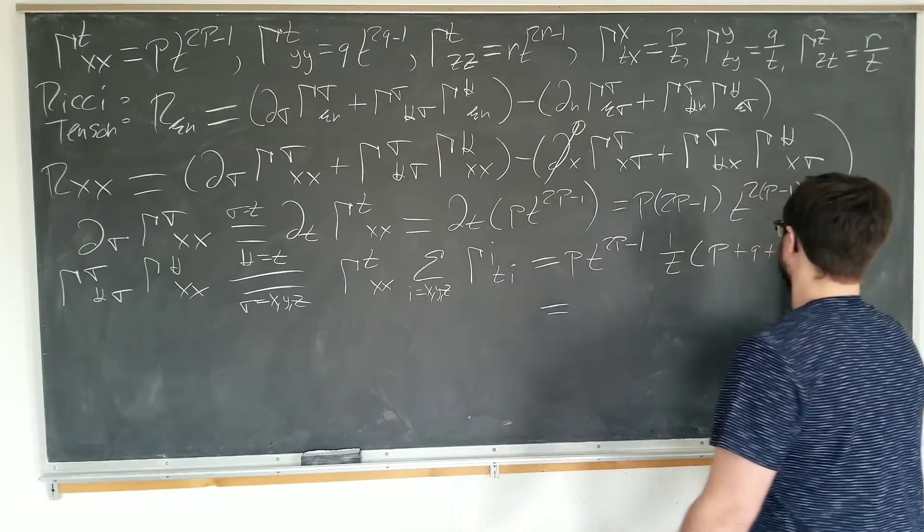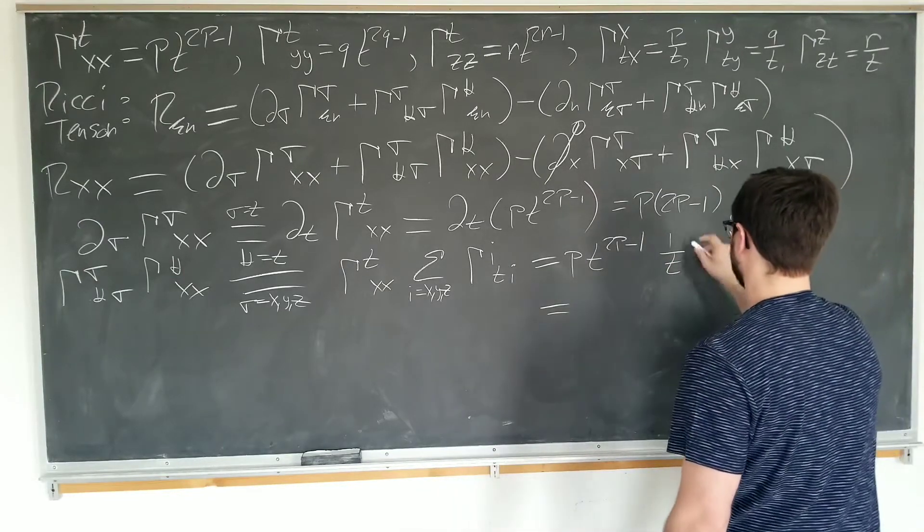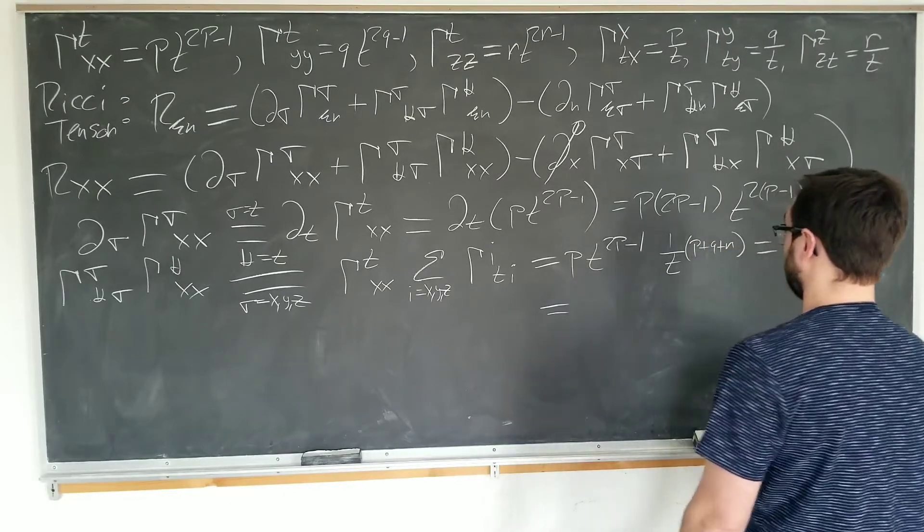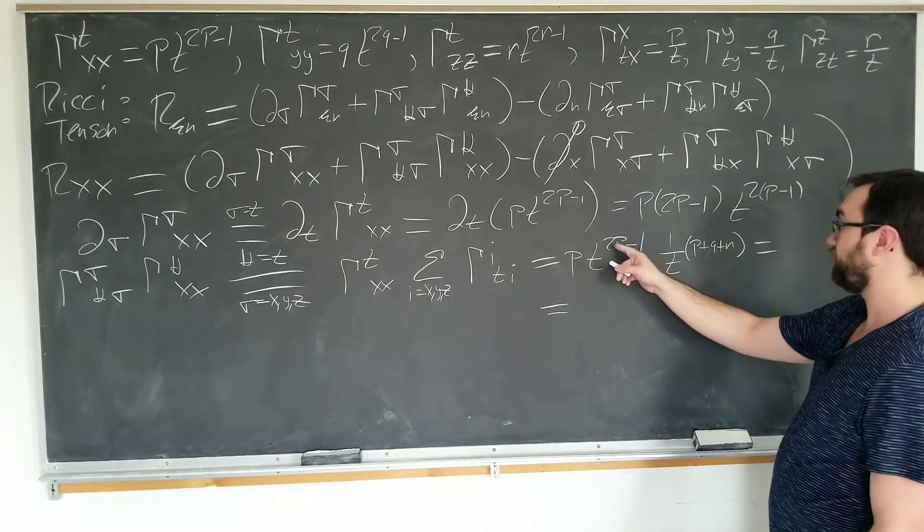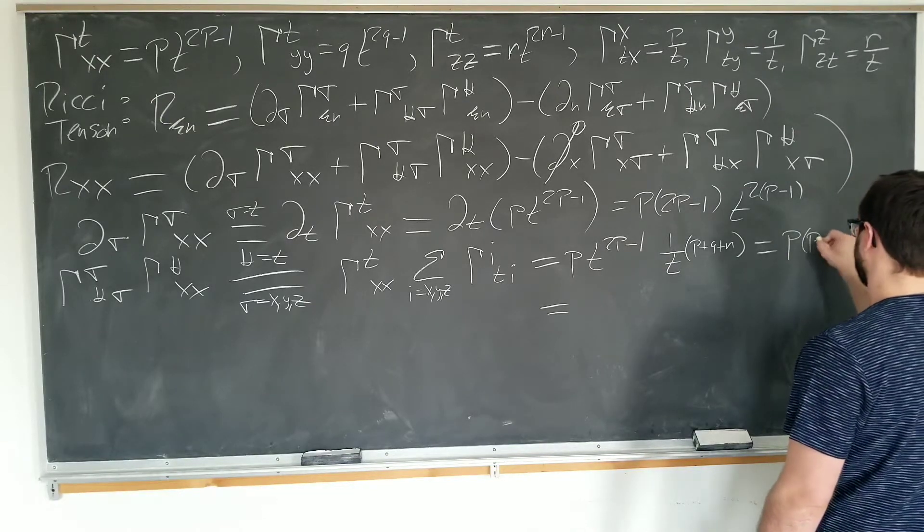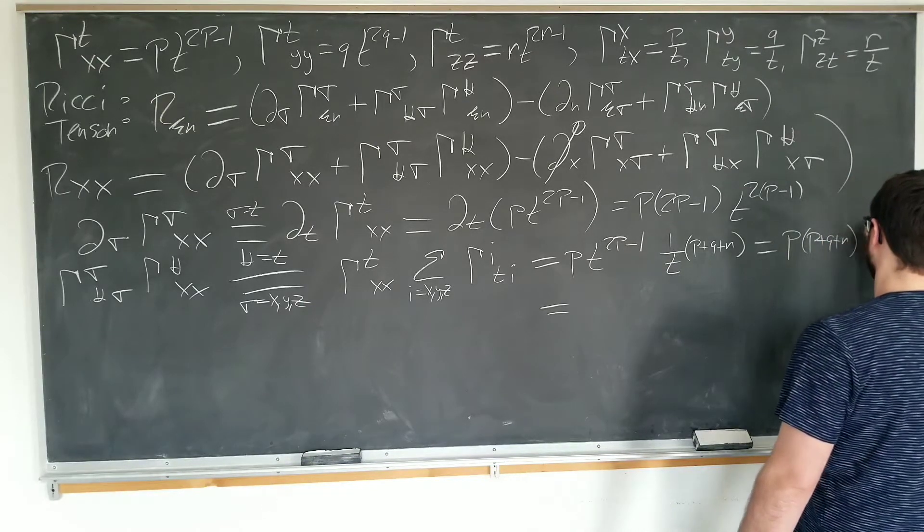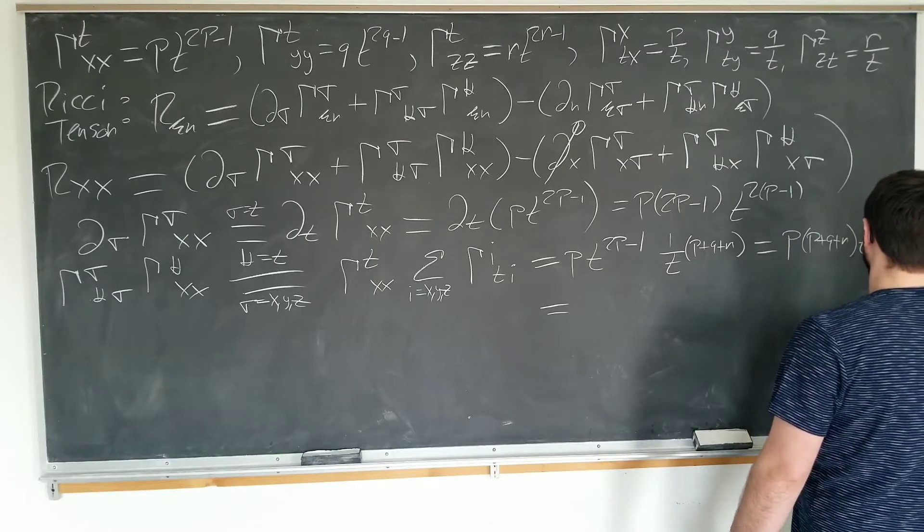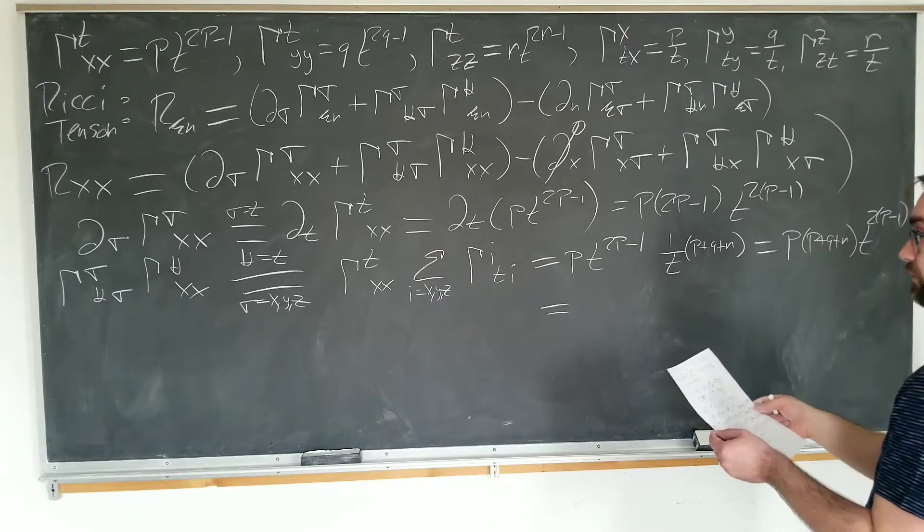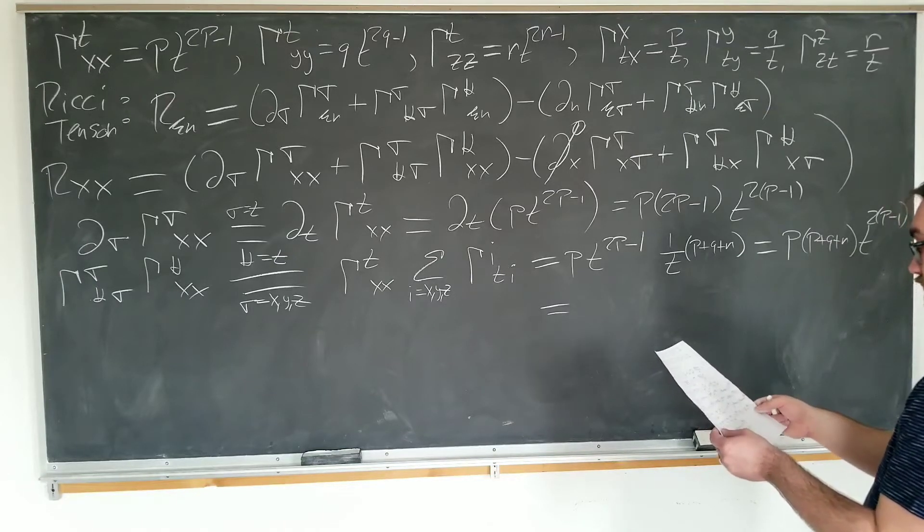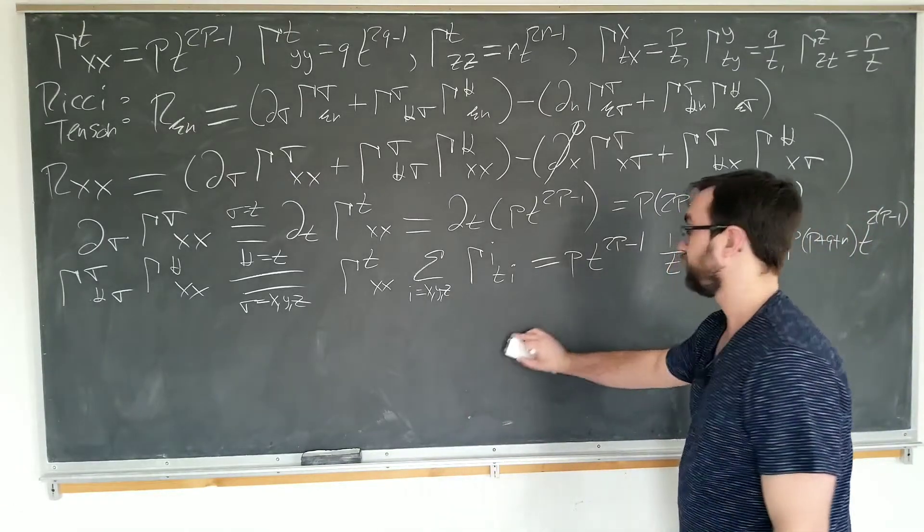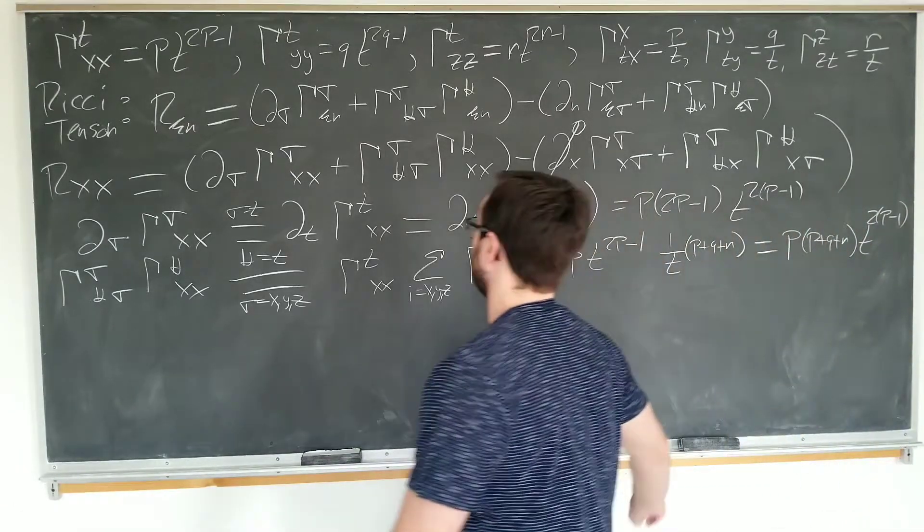Which is now equal to... don't really have enough room. Which is now equal to... Okay. We get the 2P minus 2 again. P*(P plus Q plus R)*T^(2P-1). Is this right? Is this right? That's right. P, people... Yep. It's right. We have one more of these stupid square of Christoffel symbols to calculate. We have to calculate this one.